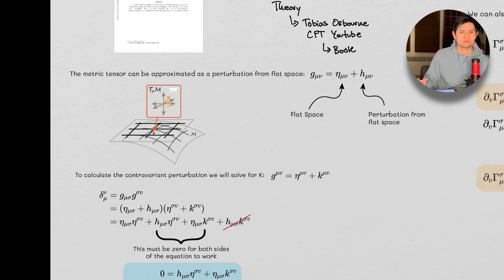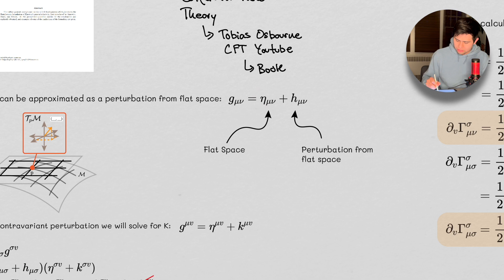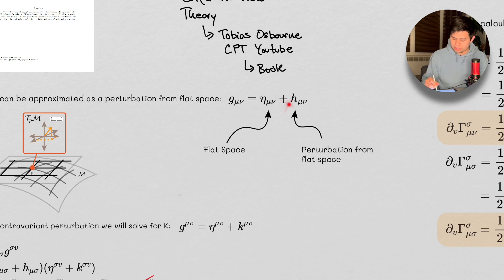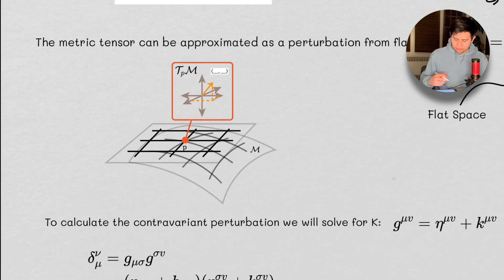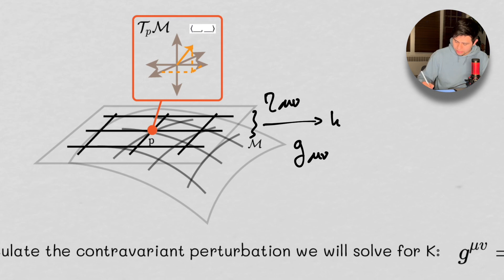Maybe you've seen this before, maybe not. The idea here is that we are going to take the metric. The metric tensor is something I've talked about in quite detail — something you can also find in other places on YouTube. We're going to take this metric and split it up into two pieces: a flat space and a perturbation from flat space. So we're going to say that the metric itself is a perturbation from flat space, and that perturbation is encoded in this tensor H_μν. We can think of it as: here's our manifold, and here's flat space. Flat space is described by η_μν, our manifold is described by g_μν, and the difference between the two is encoded by H_μν.